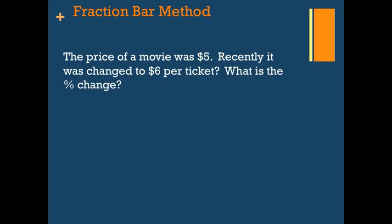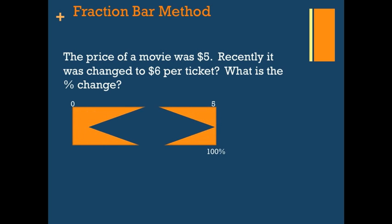Let's start using the fraction bar method. Our first example would be, the price of a movie was $5. Recently, it was changed to $6 per ticket. What is the percent change? Now to figure this out, we're going to use the fraction bar. We'll start off with the first bar, which is going to be representative of our whole amount. This is our original amount.